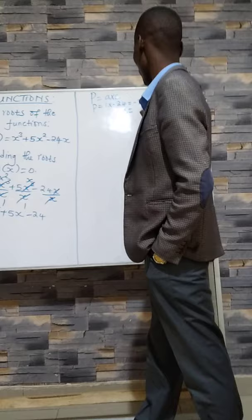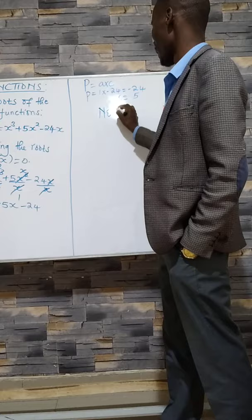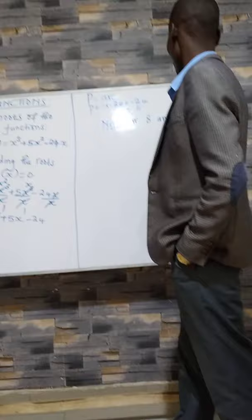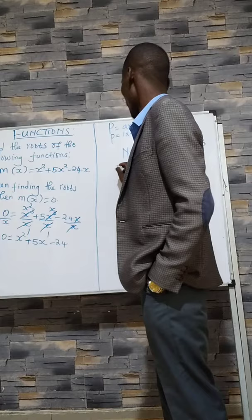Our sum is the coefficient of x, which is 5. We look for two numbers: if we add them, we get 5, and if we multiply them, we get -24. The two numbers are 8 and -3. 8 + (-3) = 5, and 8 × (-3) = -24.